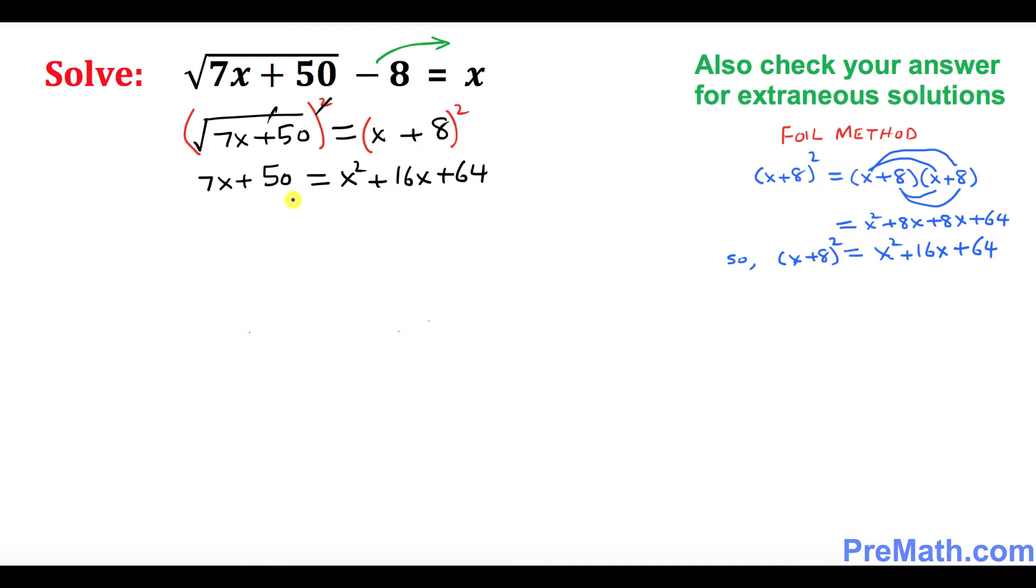Let's go ahead and combine everything on one side. Move this 7x and 50 to the right hand side. So 0 is on the left hand side. On the right hand side we have x² plus 16x plus 64. When you move this 7x to the right hand side it becomes negative 7x and minus 50 as well.